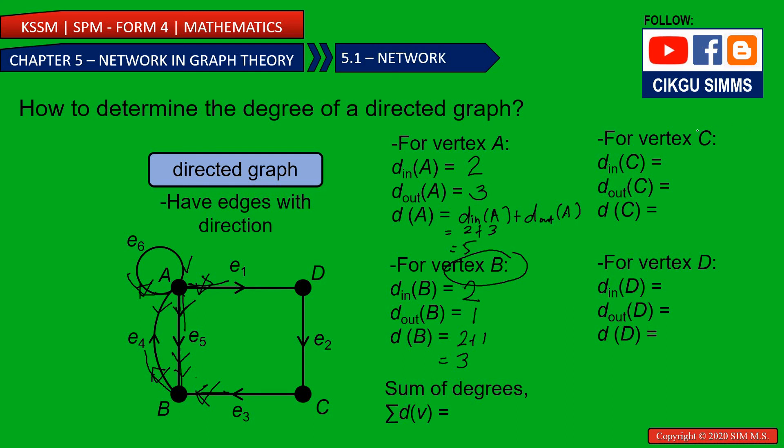And for vertex C, vertex C, one in, one out. You see one in, one out. So one in, one out, total is two. Vertex D, also one in, one out. So one, one, so one plus one is two.